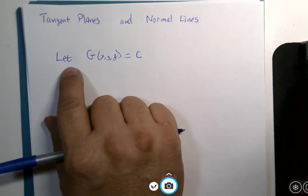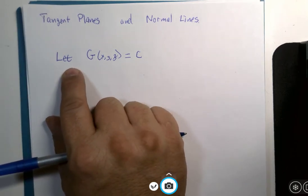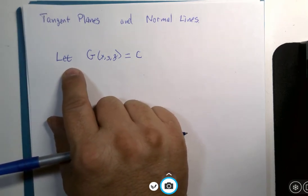I have a title for the topic, Tangent Planes and Normal Lines, but let me just say we're continuing where we've left off studying the gradient.